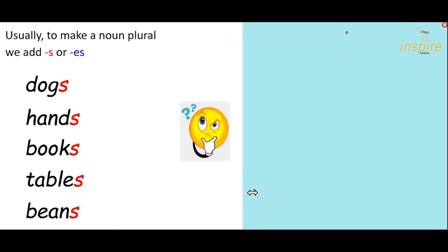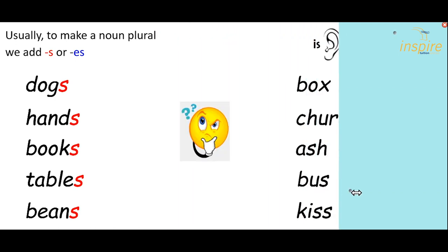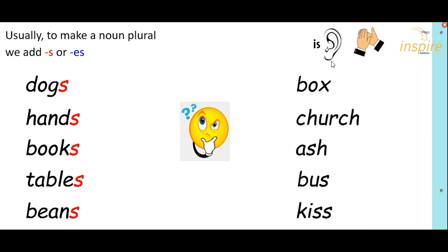But how do we know when we need to add ES? There is a trick. If it sounds like the word's ending in IS, or it adds an extra syllable, then you know it adds ES. So we have box: boxes — we have the IS and that extra syllable. Church: churches. Ash: ashes. Bus: buses.